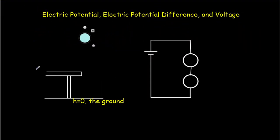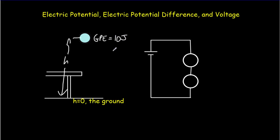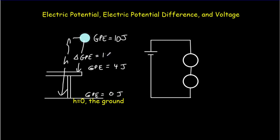When studying gravity, we might have a mass lifted to some height, with gravitational potential energy equal to mgh — let's say that comes out to 10 joules. The table is a little lower, so maybe the gravitational PE there would be only 4 joules, and on the ground it's 0 joules. If we wanted to talk about the energy available if the ball dropped onto the table, we'd deal with the change in GPE: 10 joules minus 4 joules equals 6 joules.